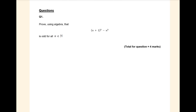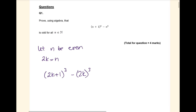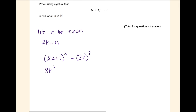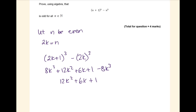Okay, proof. For some unknown reason, they require you to split these into odd and even. In my opinion, to prove this is true you don't need to do it, but for the exam board you do. So let n be even, that means 2k is equal to n. When I substitute that in and expand that bracket, I get 8k³ + 12k² + 6k + 1 minus 8k³. When I simplify that I get 12k² + 6k + 1. So then I can take a 2 out of those first two terms, plus 1 - and this is odd.